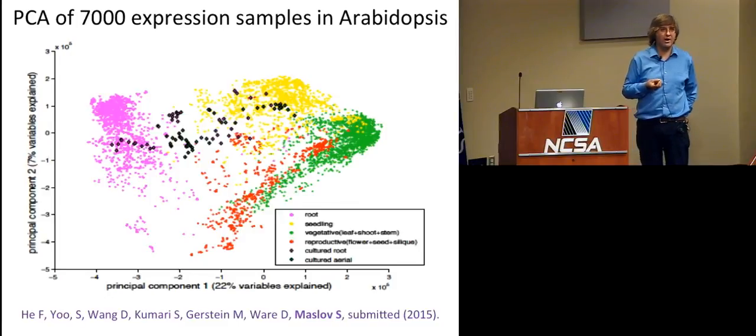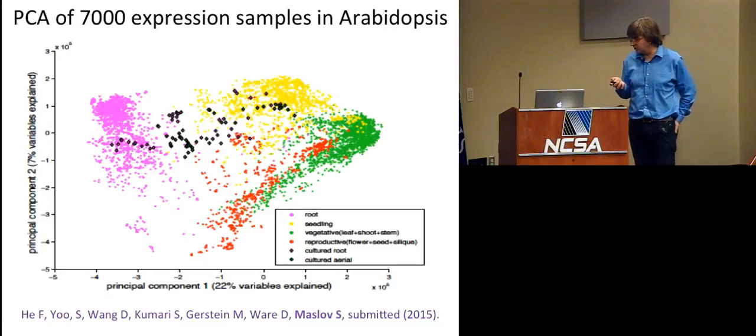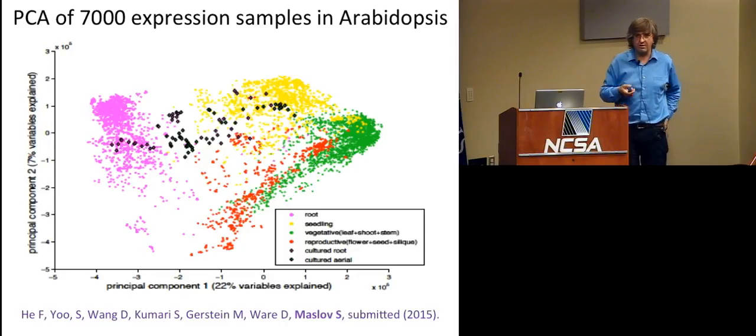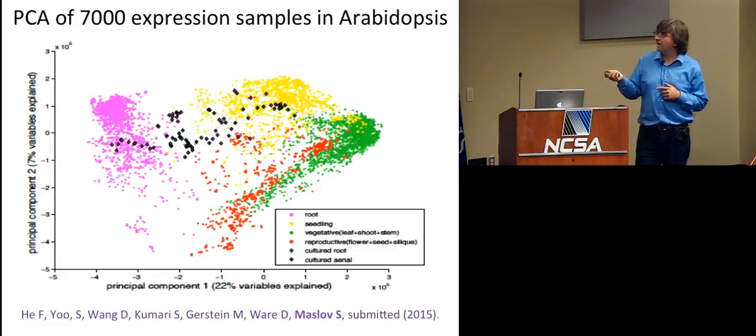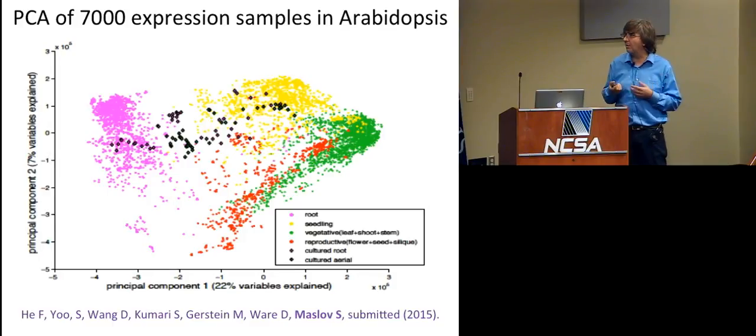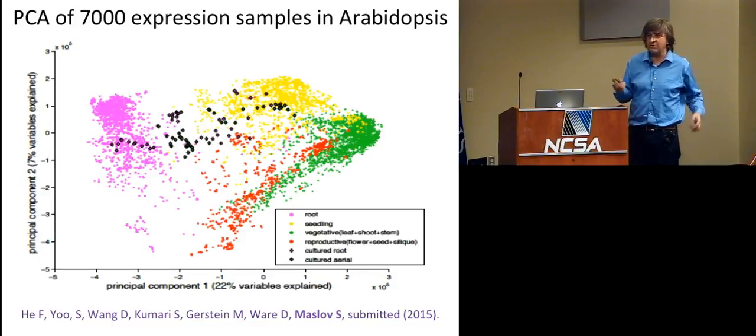So each condition and its tissue is represented by a 20,000 dimensional vector of expression levels of those genes, which are measured by, originally by microarray technology and now by next generation sequencing technologies. So we have sort of collected all this data together. And what is shown here is 7,000 of those samples. And again, the main point of this plot is that you can see how those, even a very simple-minded computational technique like a principal component analysis, shows you how those samples cluster primarily by their tissue, by the part of the plant they were isolated in.